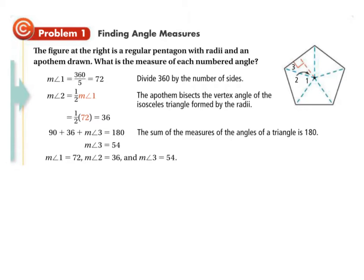Here we are finding angle measures. This is the first part because we need to start making calculations to find the information we need. The figure is a regular pentagon with radii and an apothem drawn. What is the measure of each numbered angle? The center angle is a good first thing to figure out. This center angle is going to be one of five equal angles that sum to 360 degrees — going all the way around is 360. So if you know how many equal triangles you've got, you can divide by five. The apothem just splits that angle in two.